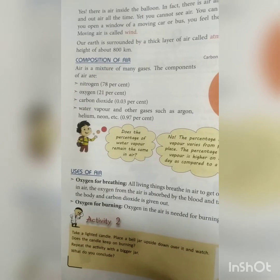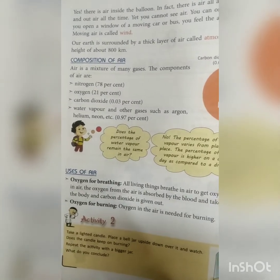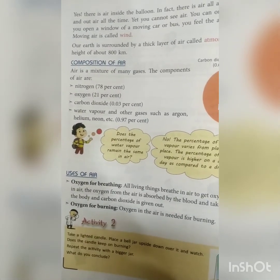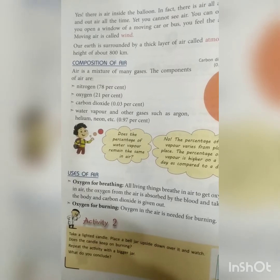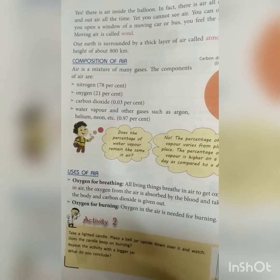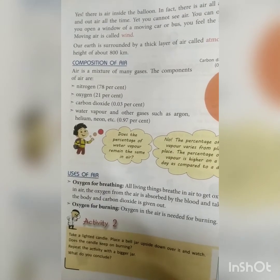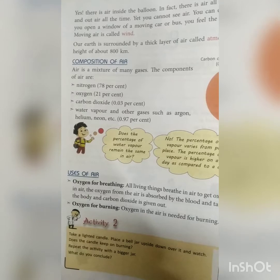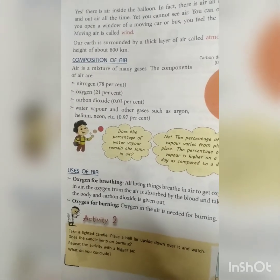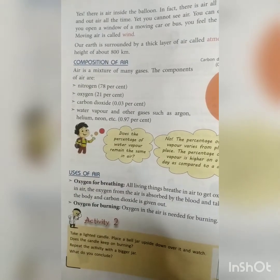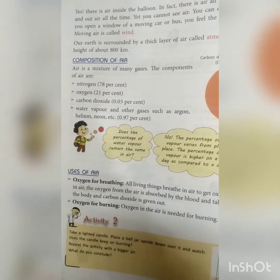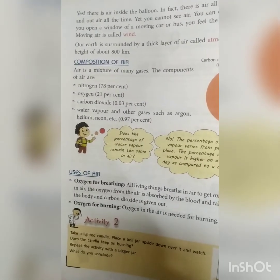As you all know, we all breathe air, but we cannot see air — we can feel only moving air. Moving air is known as wind. Our earth is surrounded by a thick layer of air called the atmosphere. The layer of air that surrounds the earth is known as the atmosphere.